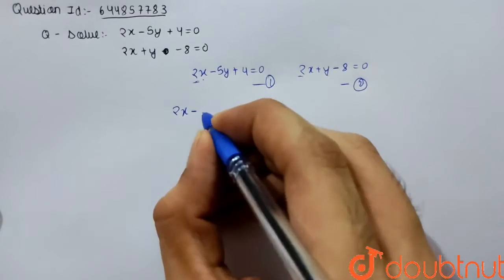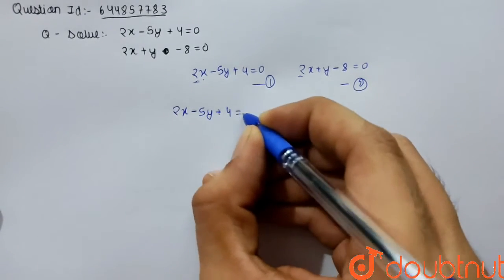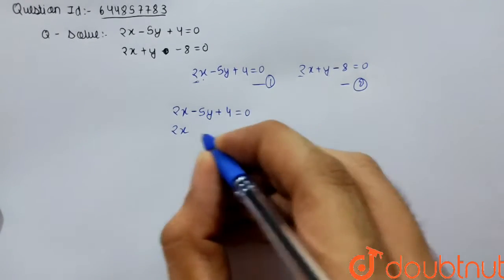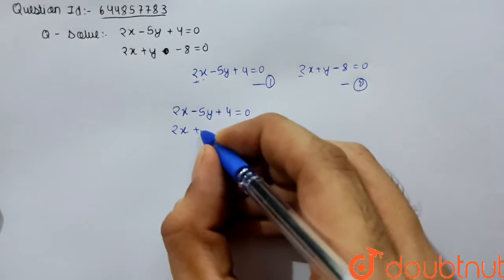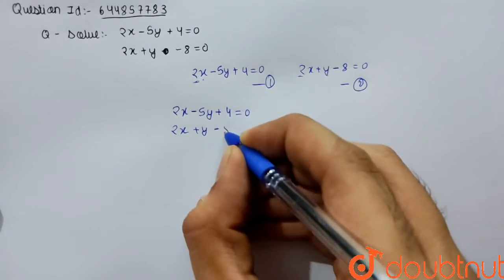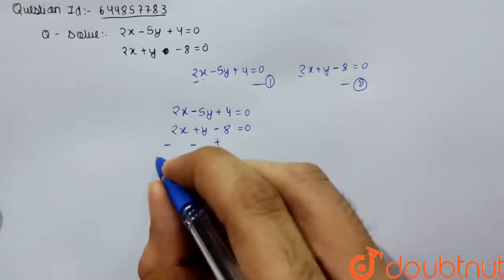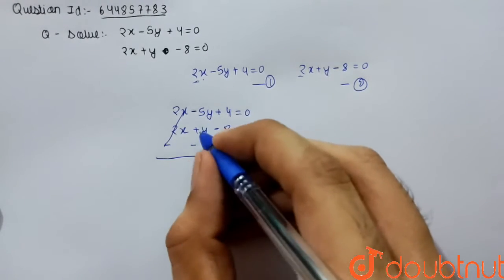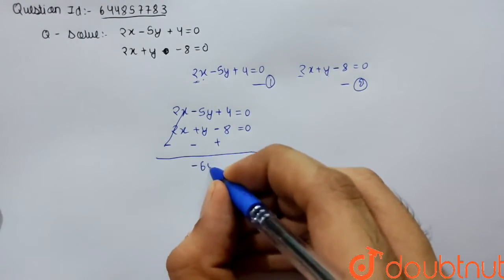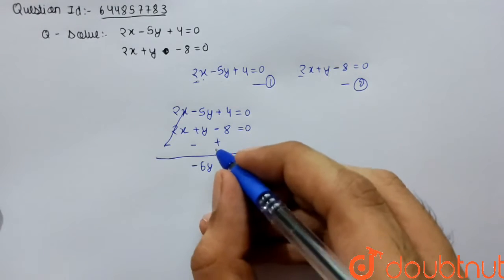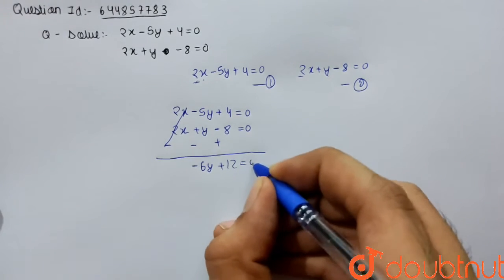So we are subtracting equation 1 by 2. Equation 1 subtracted by equation 2, which means 2x plus y minus 8 equals 0. We are subtracting, so signs will be changed. So this will be cancelled. Minus 5y minus y is minus 6y, plus 4 plus 8 is plus 12 equals 0.